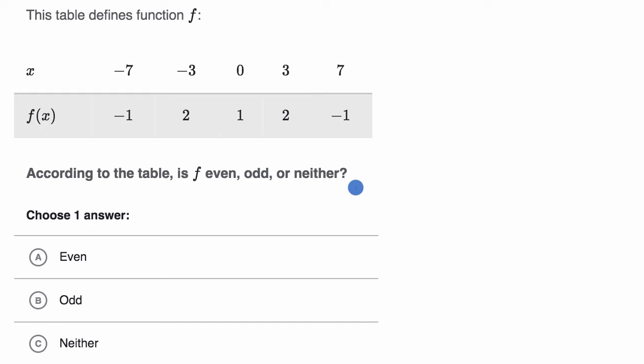Now let's work on this together. Let's remind ourselves the definition of even and odd. One definition is that if f of x is equal to f of negative x, then we are dealing with an even function.